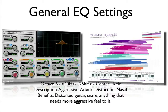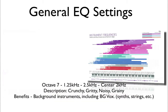Octave 6, 640 Hz to 1.25 kHz with a center point of 1 kHz. This sound would be described as a little more aggressive, with more attack, a little more distortion, and a little nasally. The benefits of using this frequency range are for distorted guitar, snares, or anything that needs a more aggressive feel.